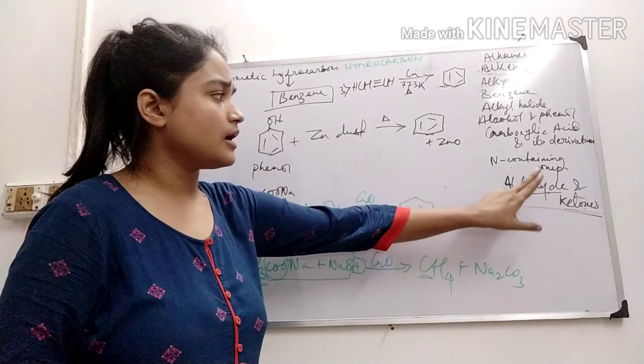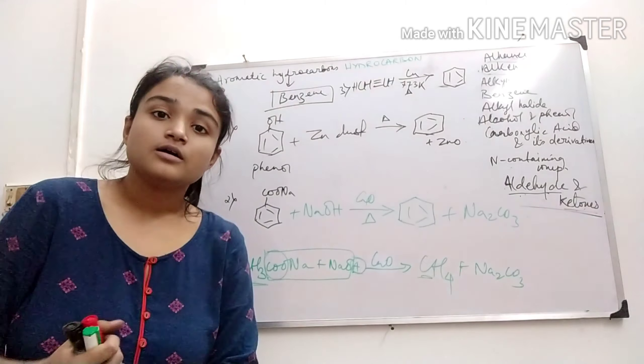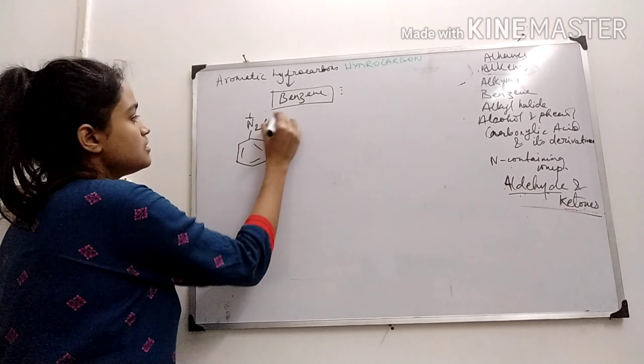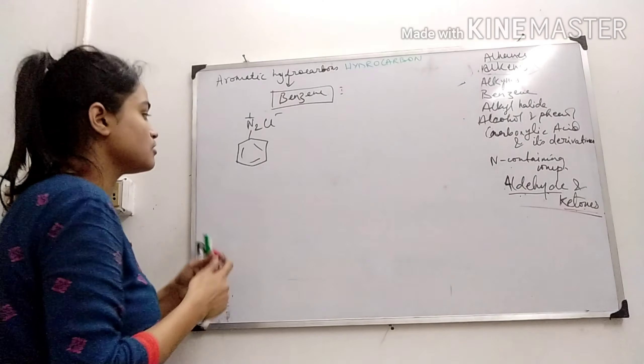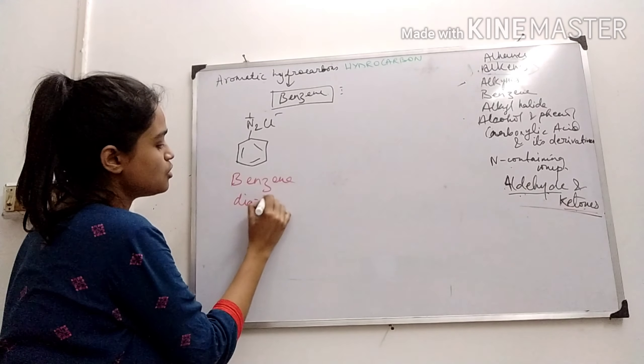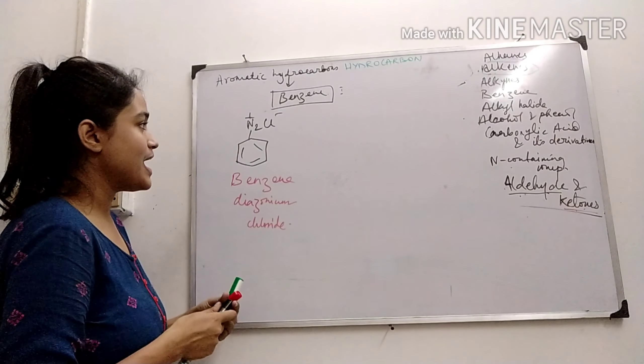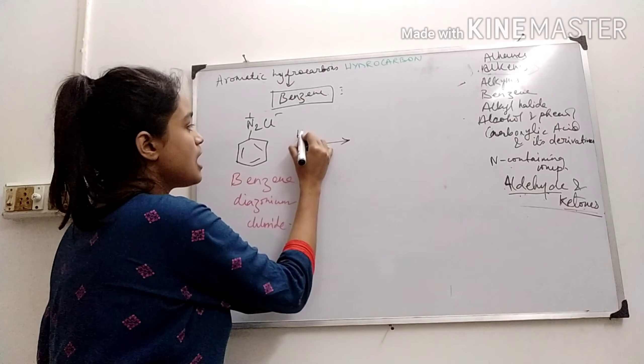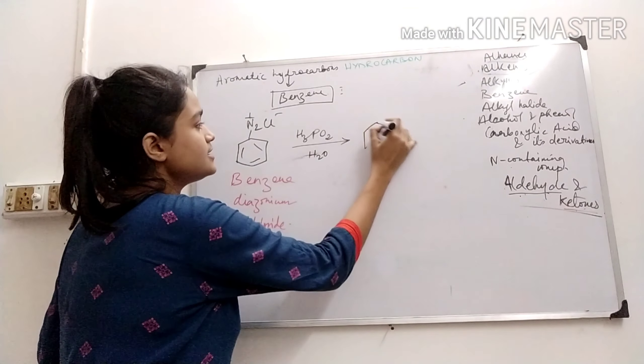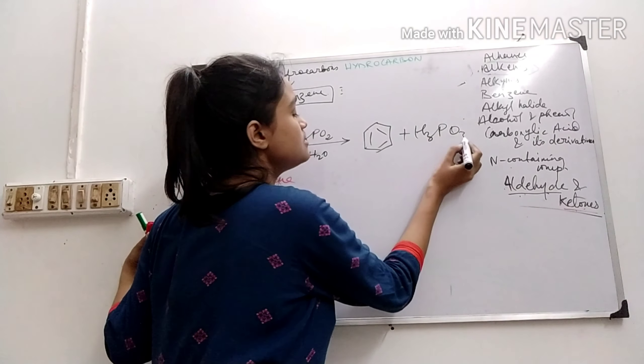Next is from nitrogen containing compound. We can also get benzene via diazonium chloride. So take benzene diazonium chloride. We get this from aniline. Now to this, if I add hypophosphorous acid and heat it and add water, I will get benzene, phosphorus acid, HCl and nitrogen.